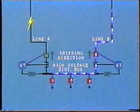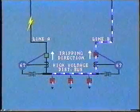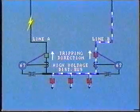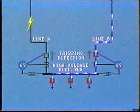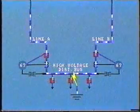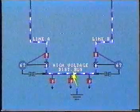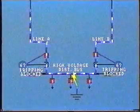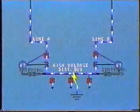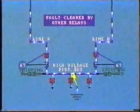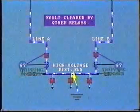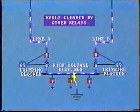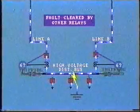For both of these lines, the correct tripping direction is when current flow is out of the bus into the line. In the case of a bus fault, current will flow into the bus from both feeders. Then both overcurrent relays will be blocked from operation by their respective directional relays. The fault would be cleared by other protection relays tripping out the same breakers — a clear case of zone overlap.